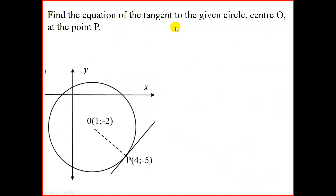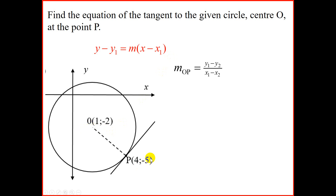Find the equation of the tangent to the given circle center O at the point P. The equation of the tangent is a straight line — we can also use y equals mx plus c. Looking at the diagram, we have the center and point P, and OP is our radius. To find the gradient of the radius, we use y1 minus y2 over x1 minus x2: that gives us negative 2 minus minus 5, which is plus 3, over 1 minus 4, giving positive 3 over negative 3, so the gradient of the radius is negative 1.